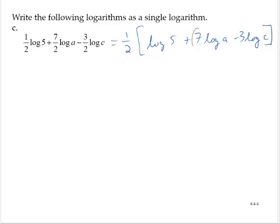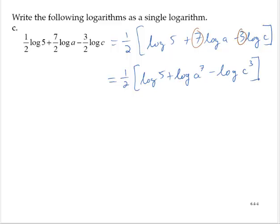Looking at the remaining coefficients — 7 and 3 — I can rewrite those as exponents on the arguments of the logarithm. So I have one half of log 5 plus log of a to the seventh minus log of c to the third. We have an addition of logarithms, so I can write that as a single logarithm of their product: one half of log 5a to the seventh minus log of c to the third.